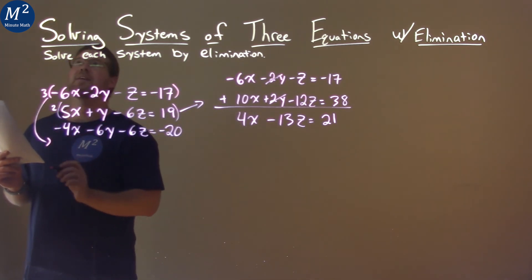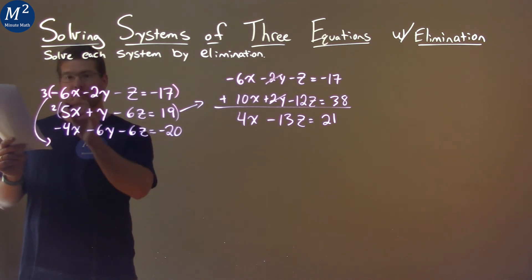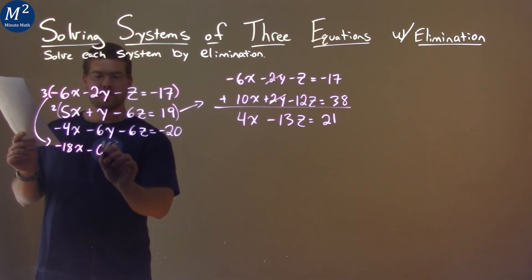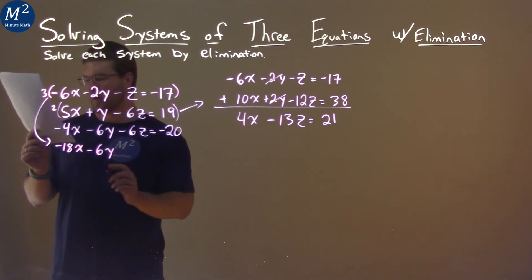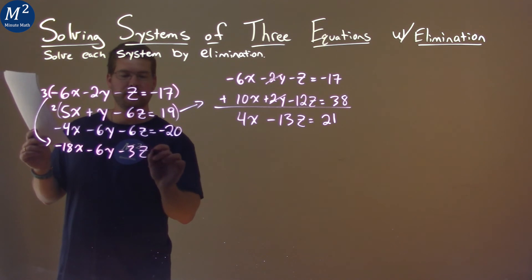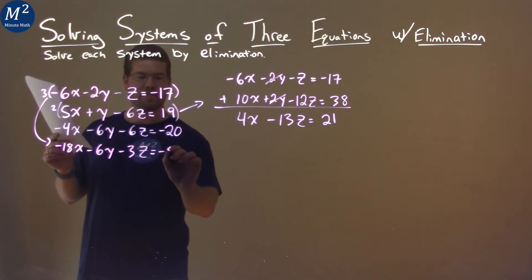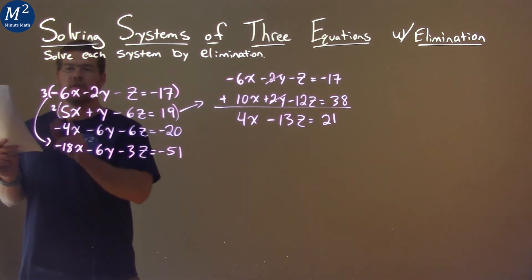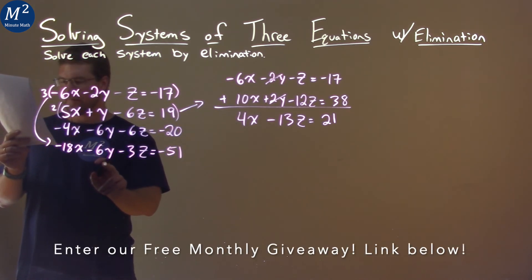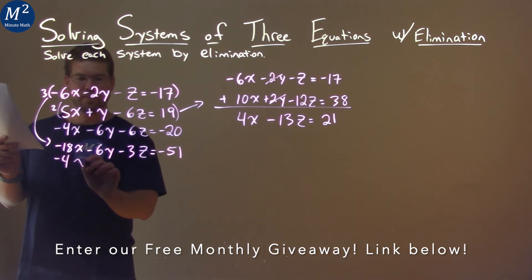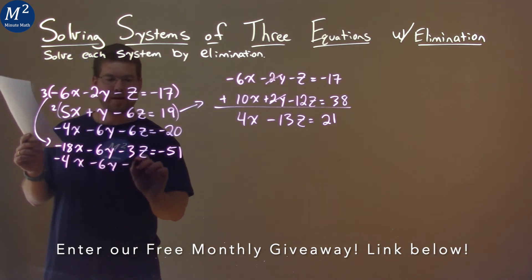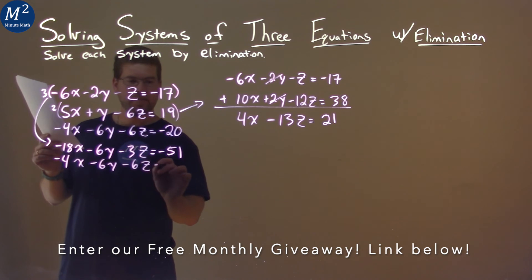So let's put that down here. 3 times negative 6 is negative 18x. 3 times minus 2y is minus 6y, and 3 times minus z is minus 3z. 3 times negative 17 is negative 51. Then we take the last equation and put it down here below it: minus 4x minus 6y minus 6z equals negative 20.